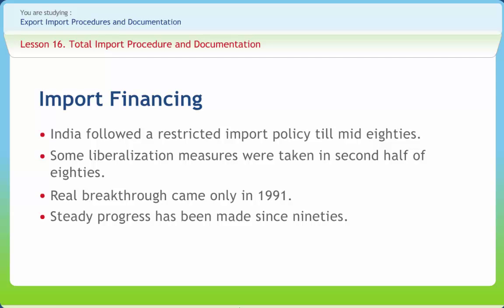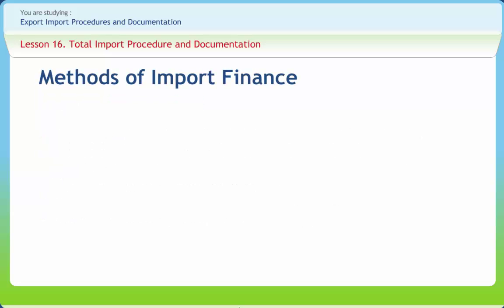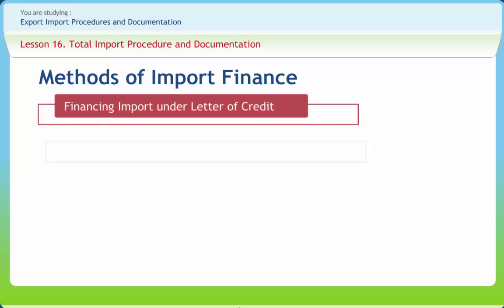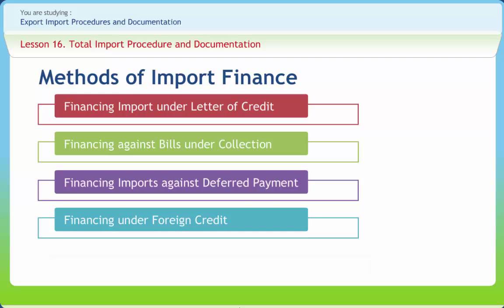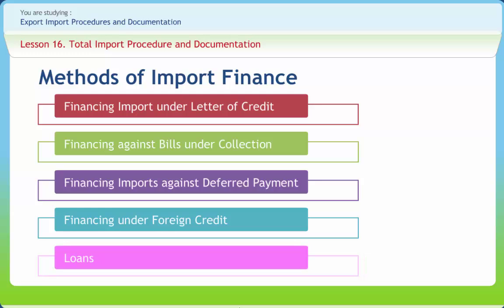Against the background of India's import trade, one has to understand import financing methods and techniques. Import financing involves making payment to foreign entities for goods purchased from them. From a management decision-making viewpoint, it means making decisions regarding terms of payment, arranging funds, involving choice of financial institution, and the instrument and intermediary to be used for making payment. The methods of import financing include financing under Letter of Credit, financing against bills under collection, financing against deferred payment, financing under foreign credit, and finance by Exim Bank of India.